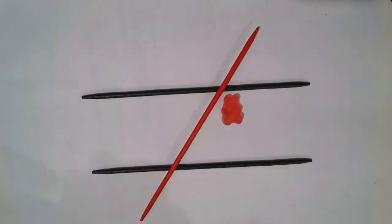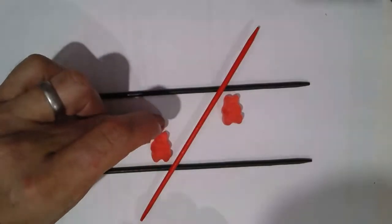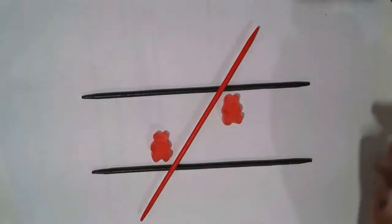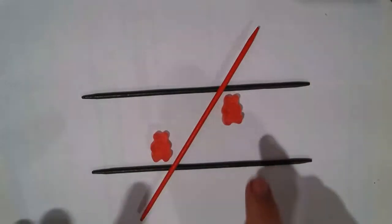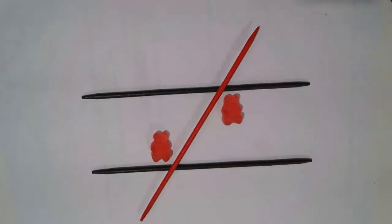Now, alternate angles, I'll leave gummy bear A where he is, also pretty cool, but they're both inside the two parallel lines, but they're on alternate sides of the transversal. And guess what? They are also equal.